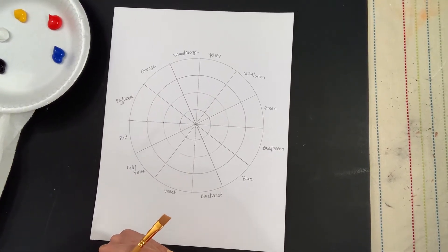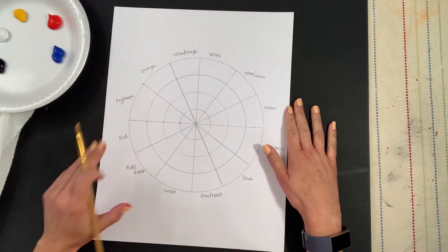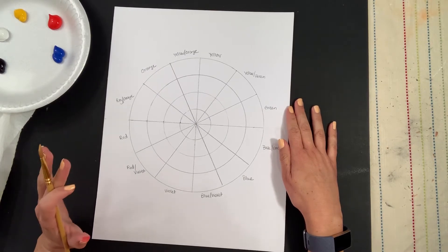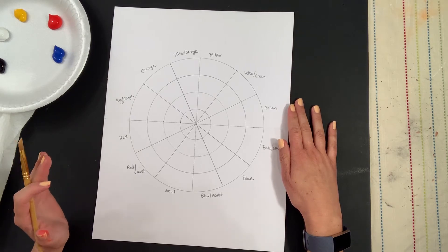Okay, so we are going to start working on the color wheel now. First of all, I recommend that you write down all of the names of each of the colors. This is also on a PowerPoint if you need to see where each color goes. We're going to start with our primary colors which are red, yellow, and blue.